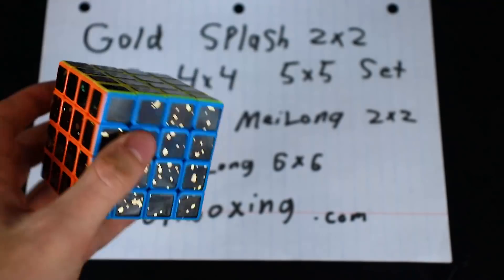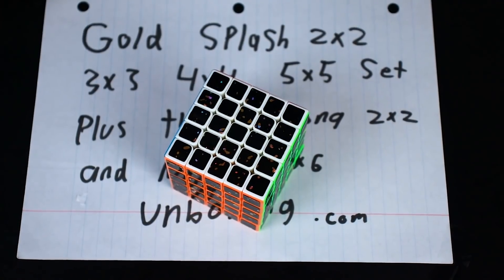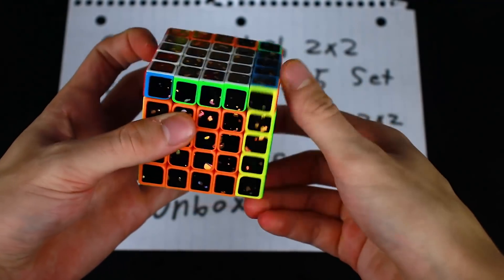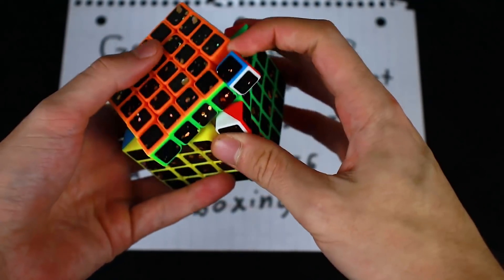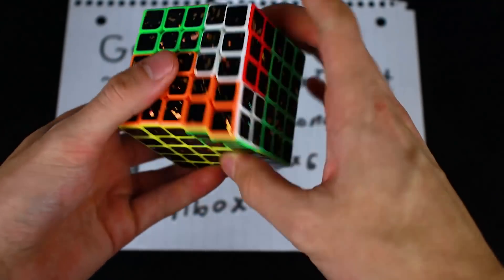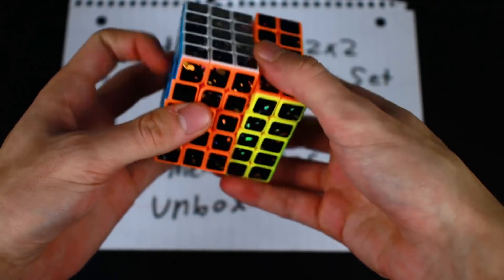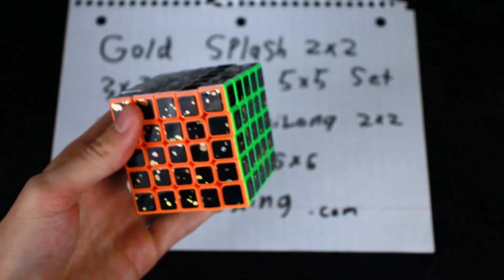But you know not the greatest speed cube ever. And five by five. And as expected the five by five is turning nice and quick. The outer layers feel really fast and the inner layers feel just a little bit slower. Not super stable feeling but whatevs.